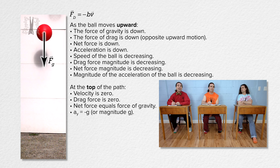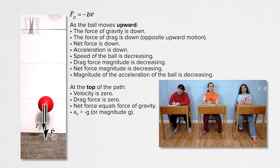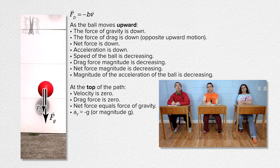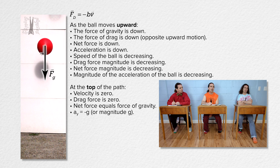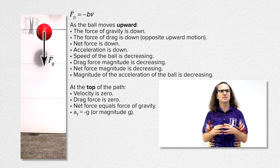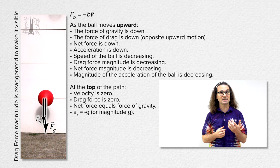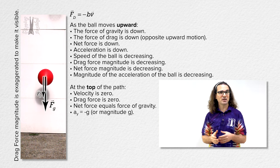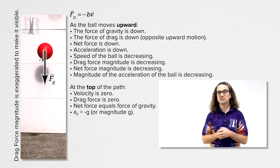The net force is always greater than the force of gravity alone, so the acceleration always has a magnitude greater than g on the way up, decreasing down to g at the apex. I also want to point out that I have exaggerated the relative magnitude of the drag force arrow in the free body diagram. If I did not do that, because the drag force is so small, the drag force arrow would be too small to see in this diagram.